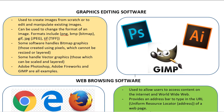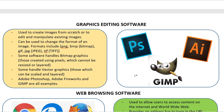Next we have graphics editing software, which can be used to create images from scratch or to edit and manipulate existing images. It can also be used to change the format of an image — for example, from PNG to BMP (bitmap), GIF, JPEG, or TIFF. Some software handles bitmap graphics, which means that if you draw over a section of the screen you will lose what's behind it. Other software handles vector graphics, which can be scaled and layered on top of each other without deleting the previous layer or losing quality. Examples include Adobe Photoshop and Adobe Fireworks.